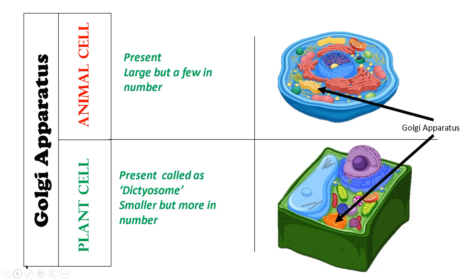The next point of difference is about Golgi apparatus. Golgi apparatus is also present in animal cells and plant cells, but in case of animal cells, Golgi apparatus is larger in size but its number is much lesser. On the other hand, in case of plant cells, they are much smaller in size but more in number, and here they are called dictyosomes.